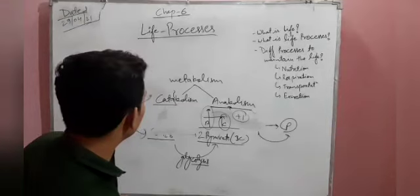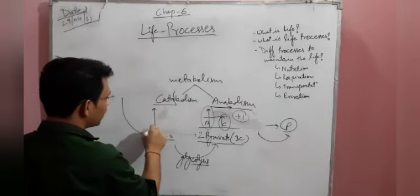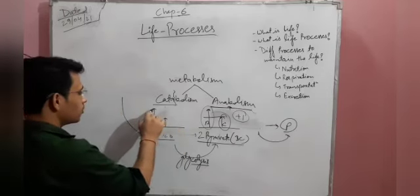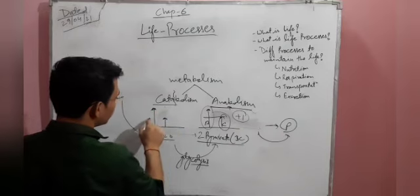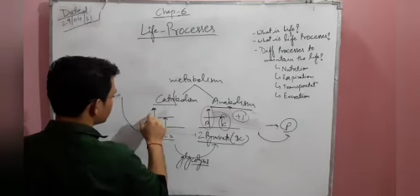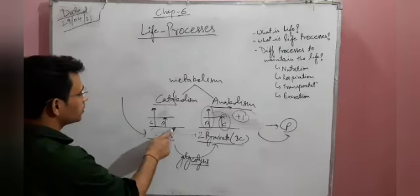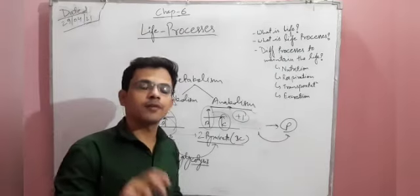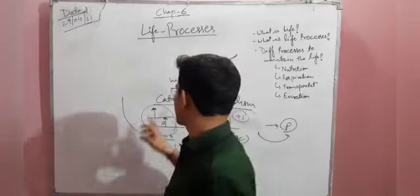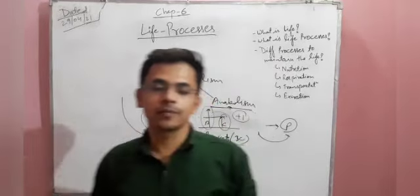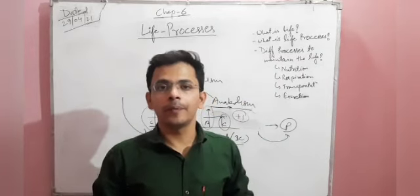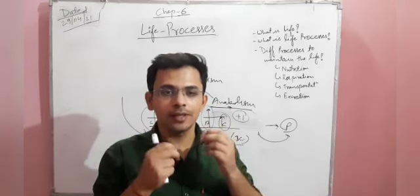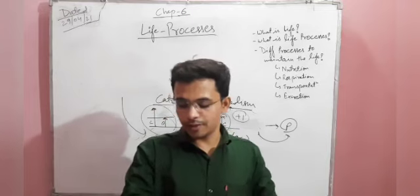When the catabolic reaction rate is high and the anabolic reaction rate is low, this is what happens in older people. That is why older people degrade day by day — their muscles degrade, facial muscles degrade, bone strength degrades, and they get wrinkles in their skin.